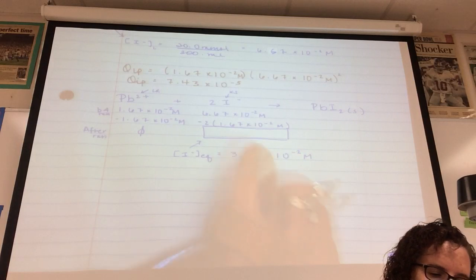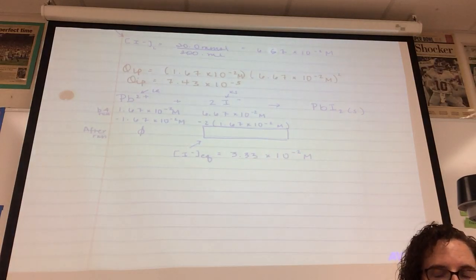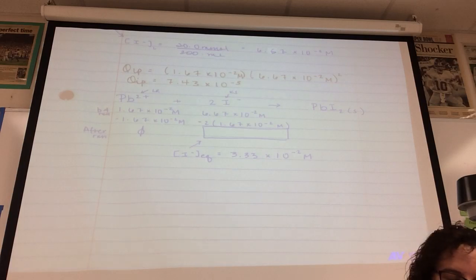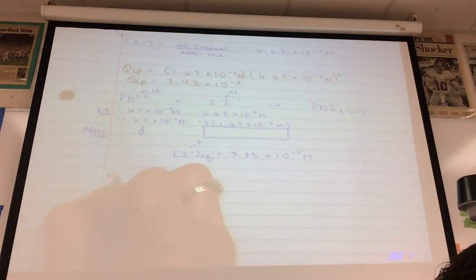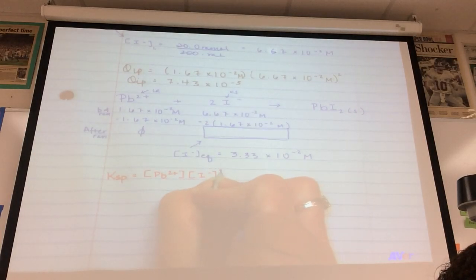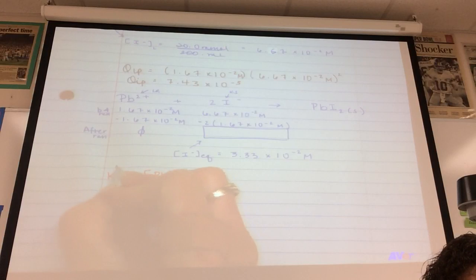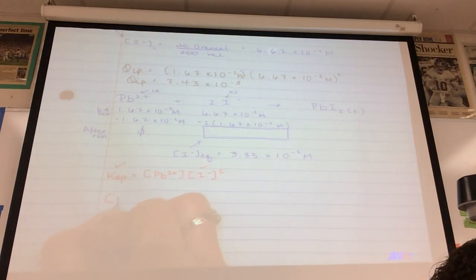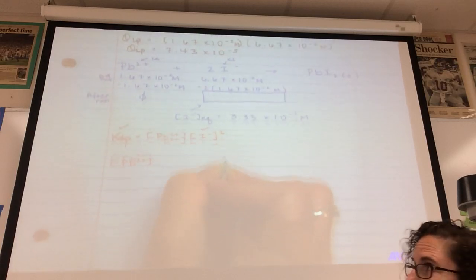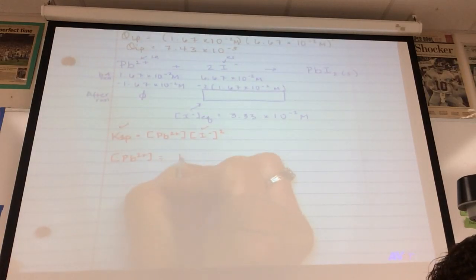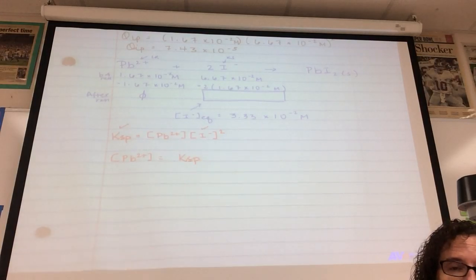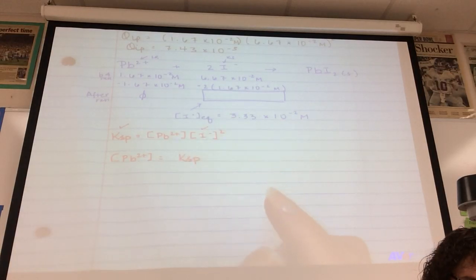You're going to use it all, nothing left. Why am I going to multiply that amount by two? Because of the coefficient. And so what I have left here is going to be the concentration of iodide ion at equilibrium. That's the first one. My KSP is equal to lead 2 ion times iodide ion squared. This is given. I now have this. I can solve for lead 2 ion concentration.